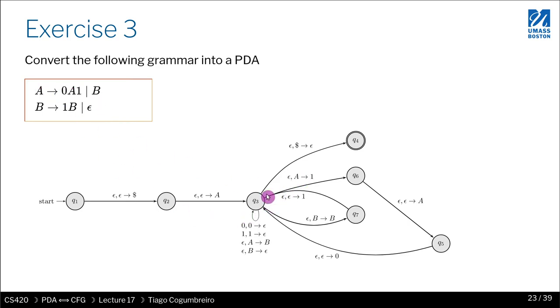We pop A because that's the rule that we are consuming, and then we push 1 and then A, and then 0. We always go back to Q3. That's basically it.